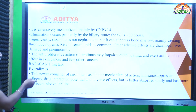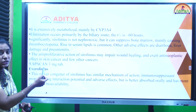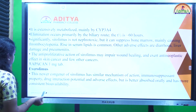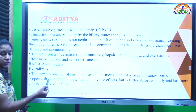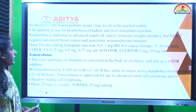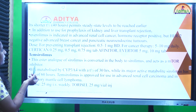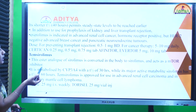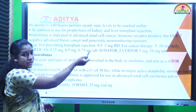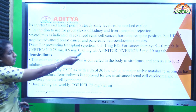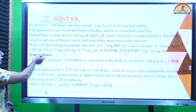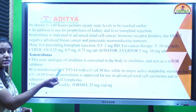The next drug is everolimus, a newer analog of sirolimus. Its uses include cancer conditions like breast cancer and renal cell cancer. Adverse effects and pharmacokinetics are similar to sirolimus, but its half-life is shorter at 40 hours. It can be used in kidney and liver transplant and cancer conditions including breast cancer, renal cell cancer, and pancreatic cancer. The dose is 0.5 to 1 mg twice a day; for cancer therapy, 5 to 10 mg daily. Sold as Zortress/Certican in 0.2 mg, 0.5 mg, and 0.75 mg tablets.